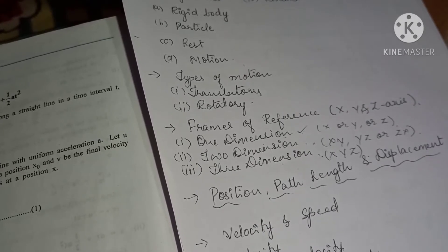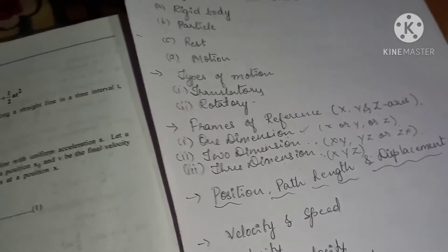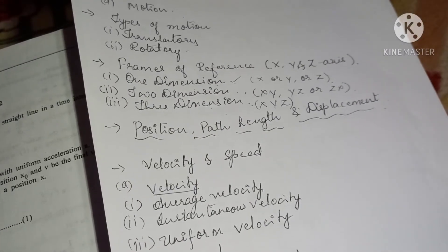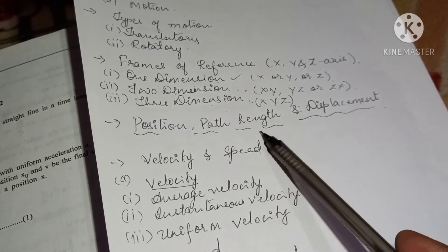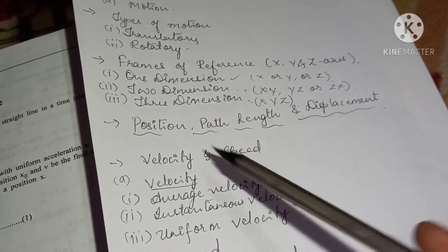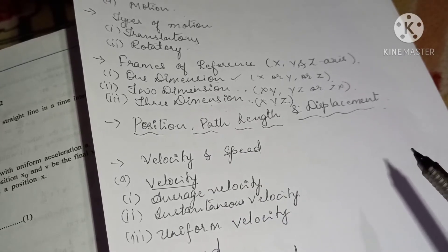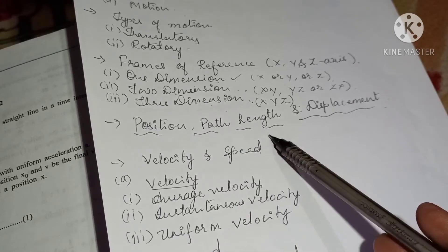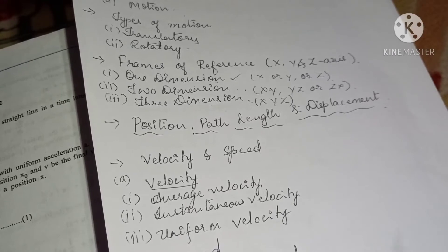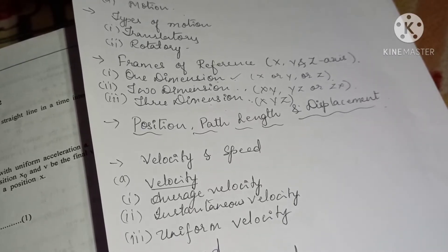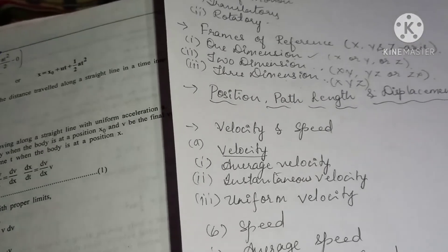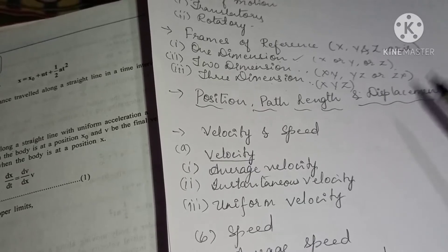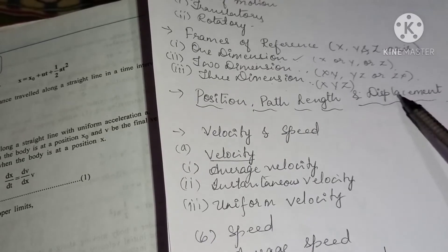Position, path length, and displacement: position and path length are scalar quantities, while displacement is a vector quantity. Position is the location of an object in the coordinate system. Path length is the distance covered from one point to another. Displacement is the shortest distance between two points, measured in meters.